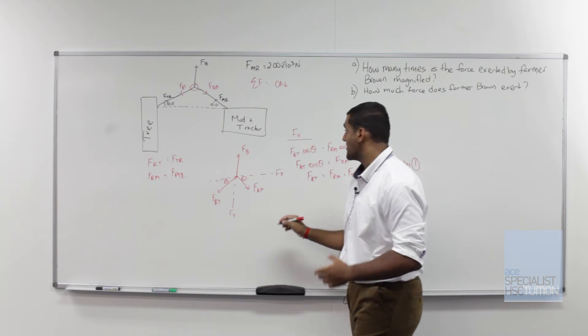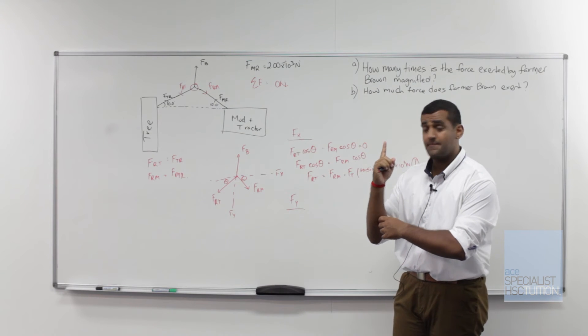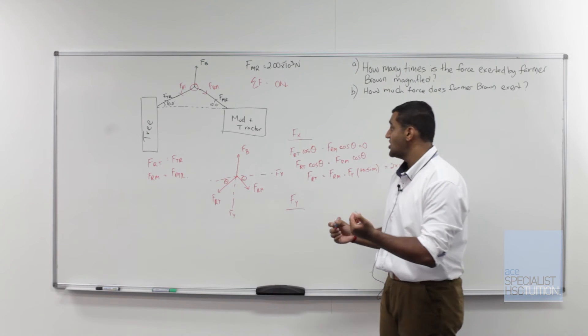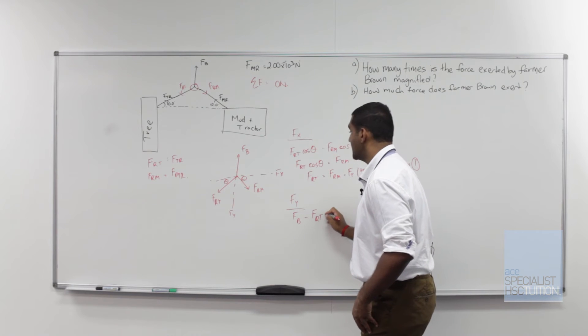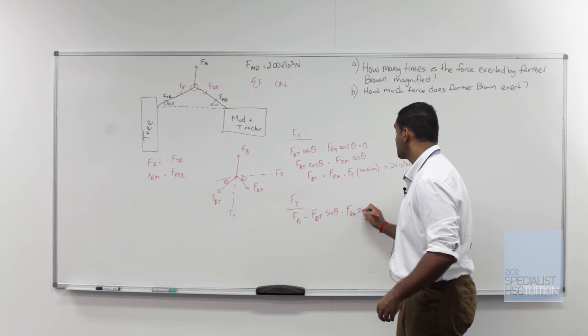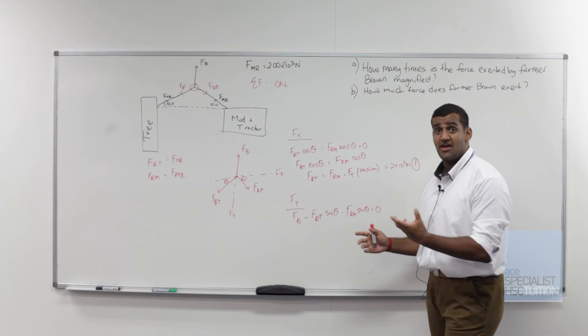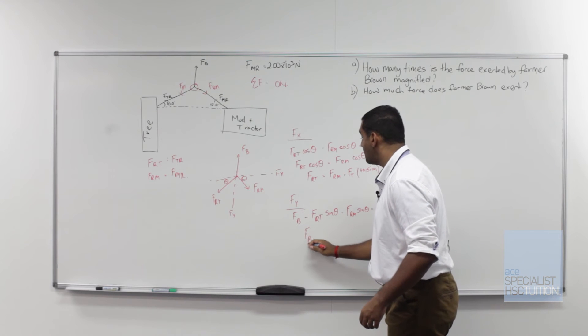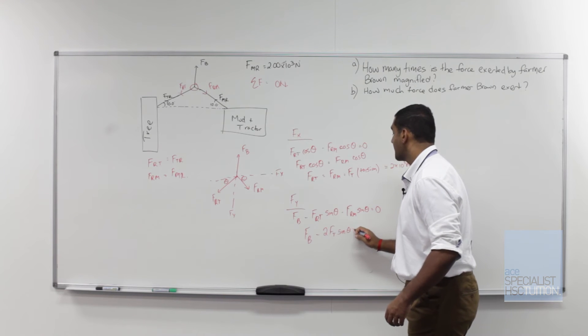Now let's consider the y-direction. Here we've actually got three forces. We've got FB acting up and the perpendicular components or the vertical components of FRT and FRM acting down. So if we were going to equate these, we get FB minus FRT sin theta minus FRM sin theta is equal to zero. Now we know that FRM and FRT are equal from our equation one here. So we can rearrange this to just give FB minus 2 FT sin theta is equal to zero.